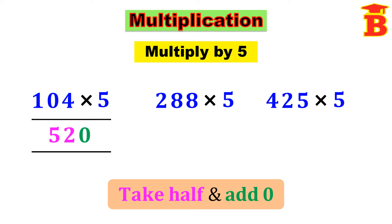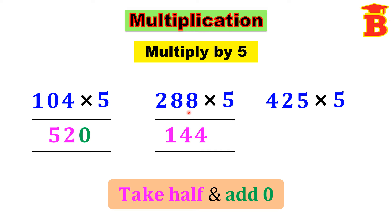Next let us multiply 288 into 5. We follow the same method: take half and then add 0 at the back. Take half of 288, that is 144, and then add 0 at the back. Therefore the answer is 1440.